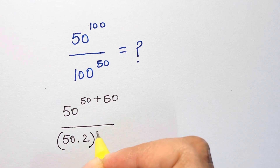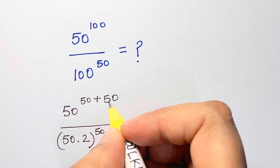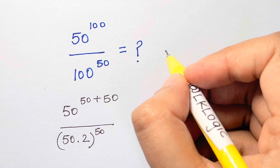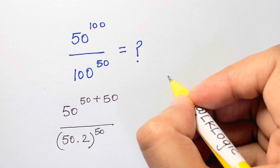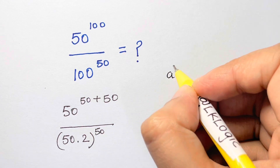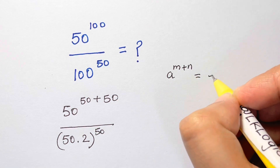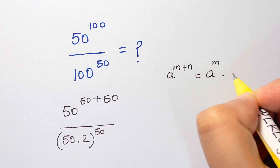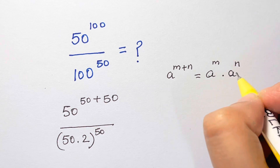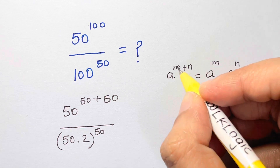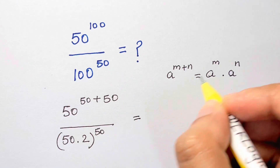Now here, what do I have? We have addition and power. So which rule am I going to apply here? Whenever you have something like a to the power of m plus n, what you do is a to the power of m times a to the power of n. So when you have the same base with multiplication, we add the powers.